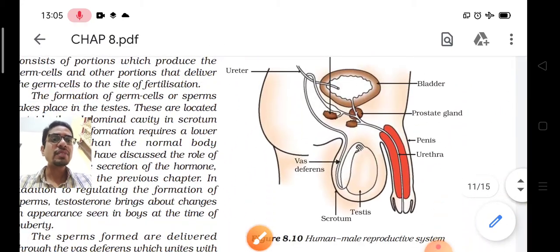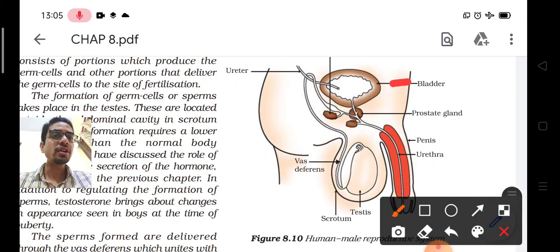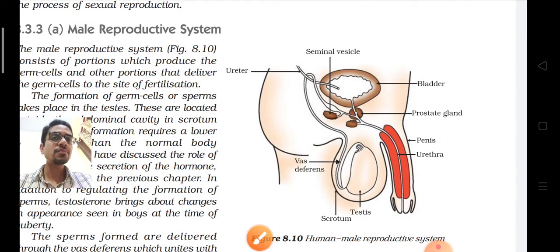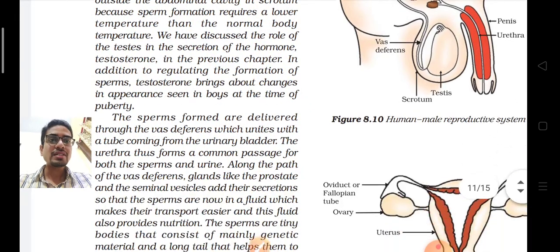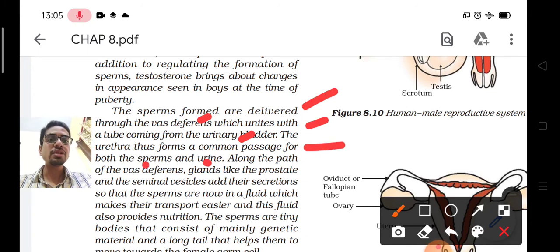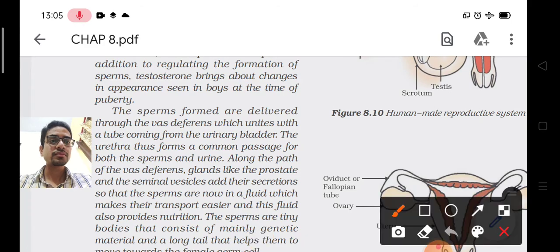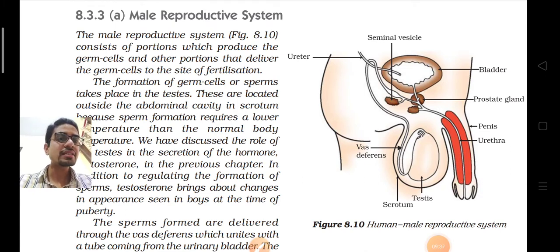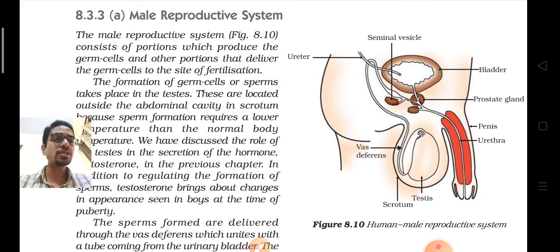The sperm is delivered through the vas deferens, which unites with a tube coming from the urinary bladder where urine is stored. The urethra thus becomes a common passage for both sperms and urine. So the male reproductive system includes testes, vas deferens, prostate gland, seminal vesicles, and urethra, each with their specific functions.